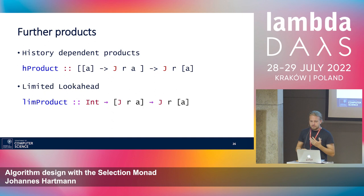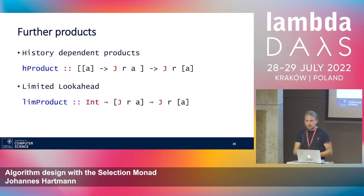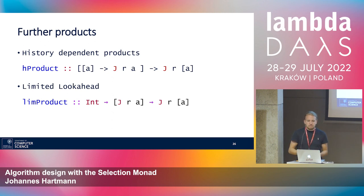Further, you can also think about removing the limitation of needing to know the solution length upfront. You could thread through a predicate that tells you when to stop — an iterated product. There are many more products that might be useful in the context of the selection monad, each resulting in different algorithms.